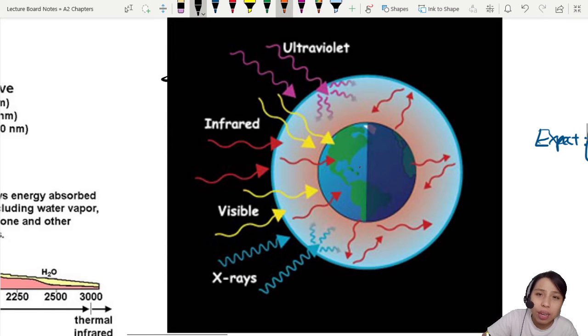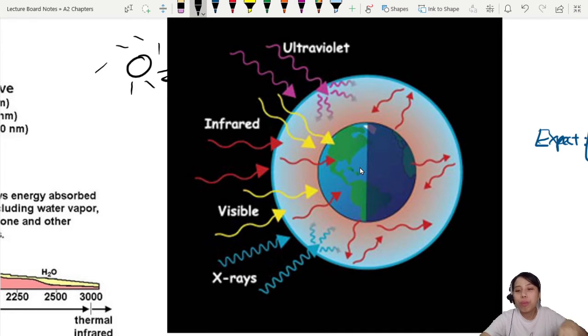So a sun, how do I draw a sun? Solar sun. Sun is throwing all these wavelengths at us. But thankfully, we have a layer of protection. This layer we call our precious atmosphere.